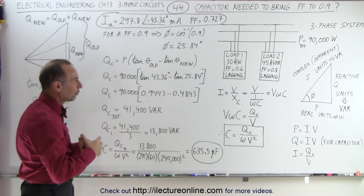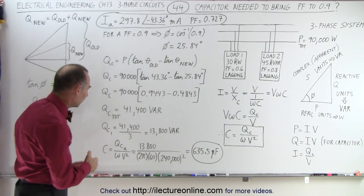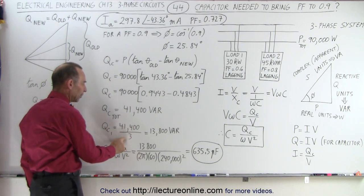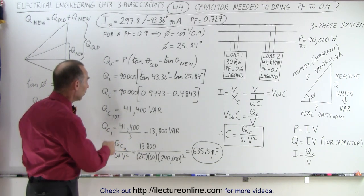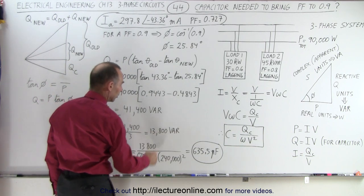But that's for all three phases of the circuit. To get that down to one of the phases, we need to divide that by three. We have one-third of the power in each phase, so therefore that's 13,800 VAR.